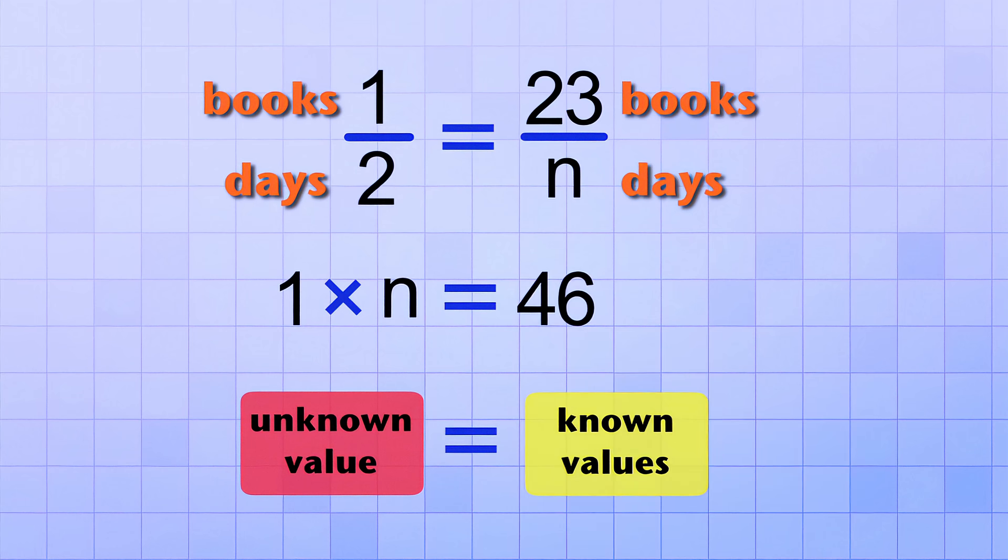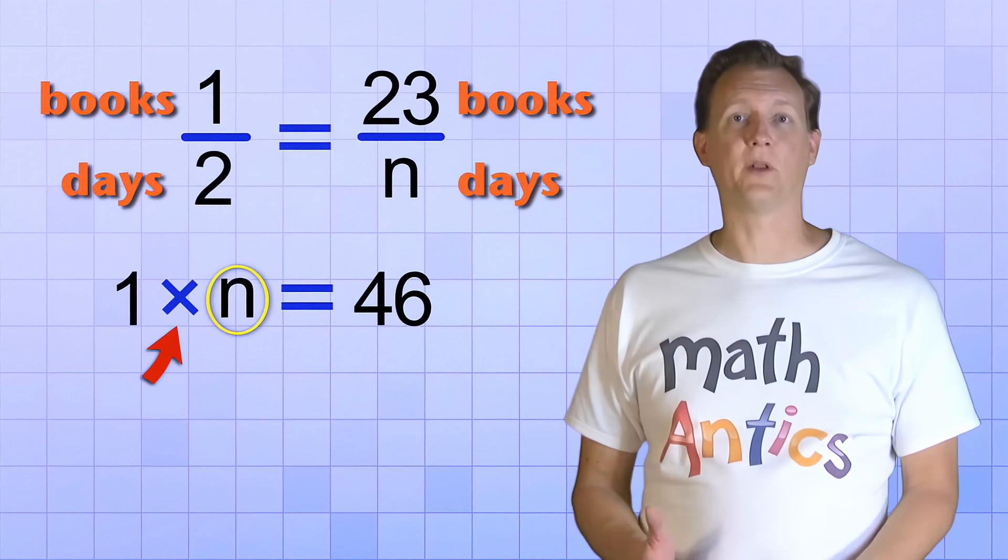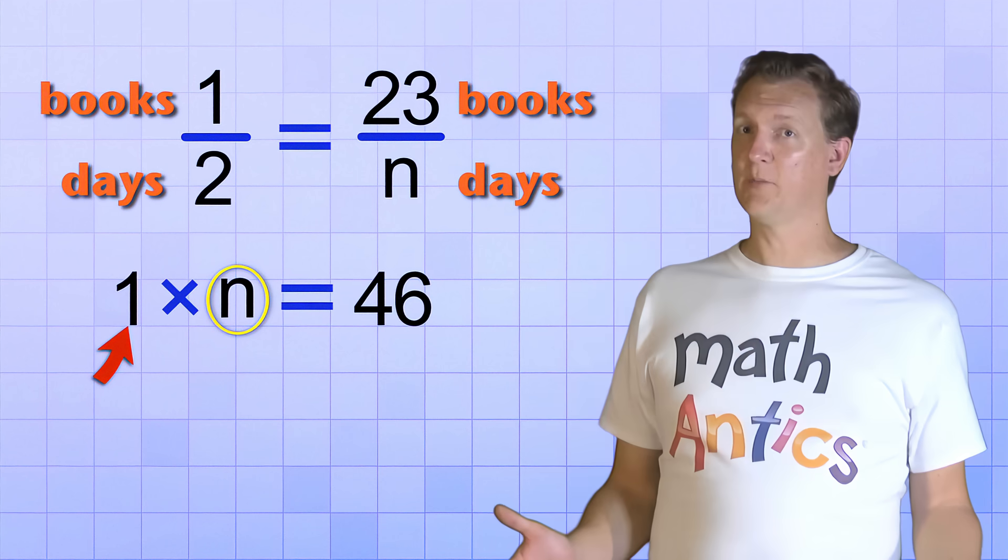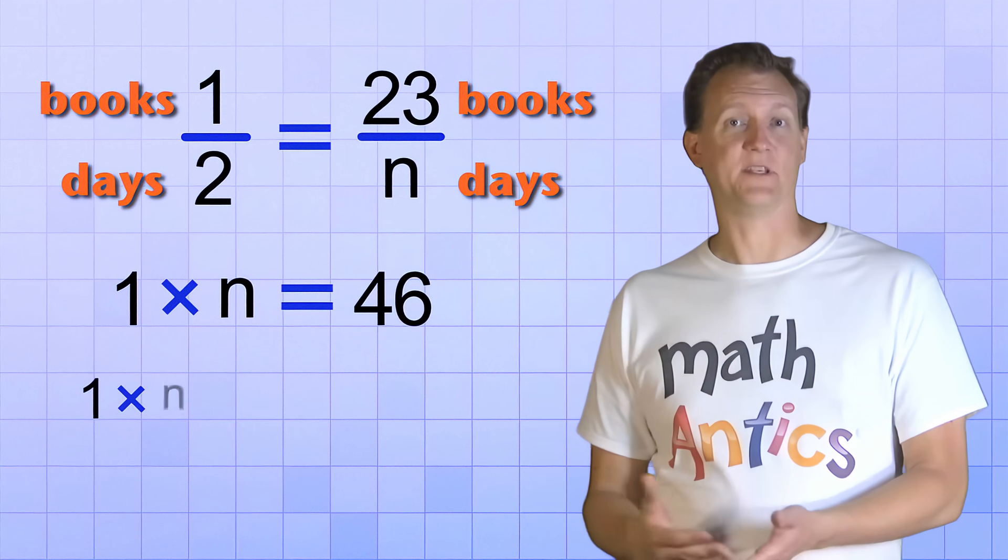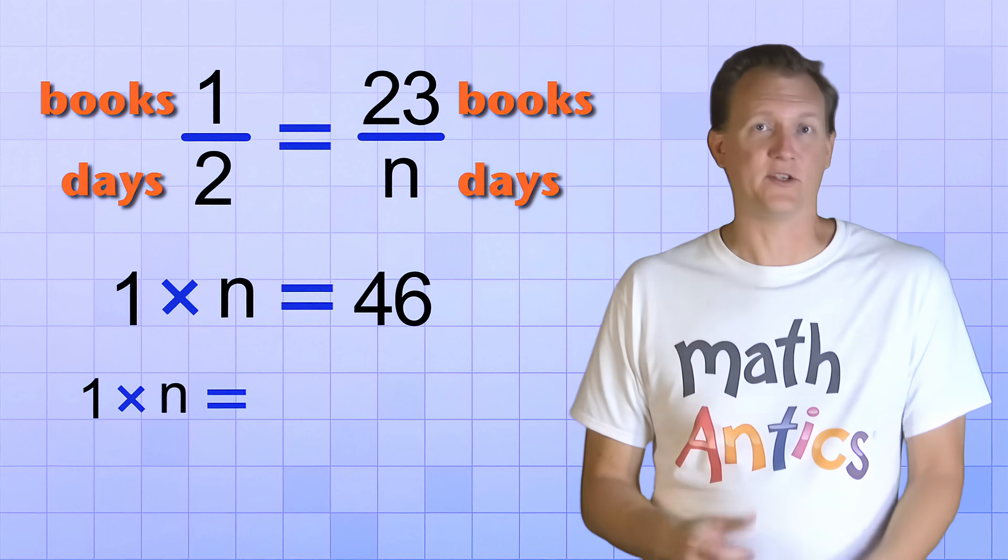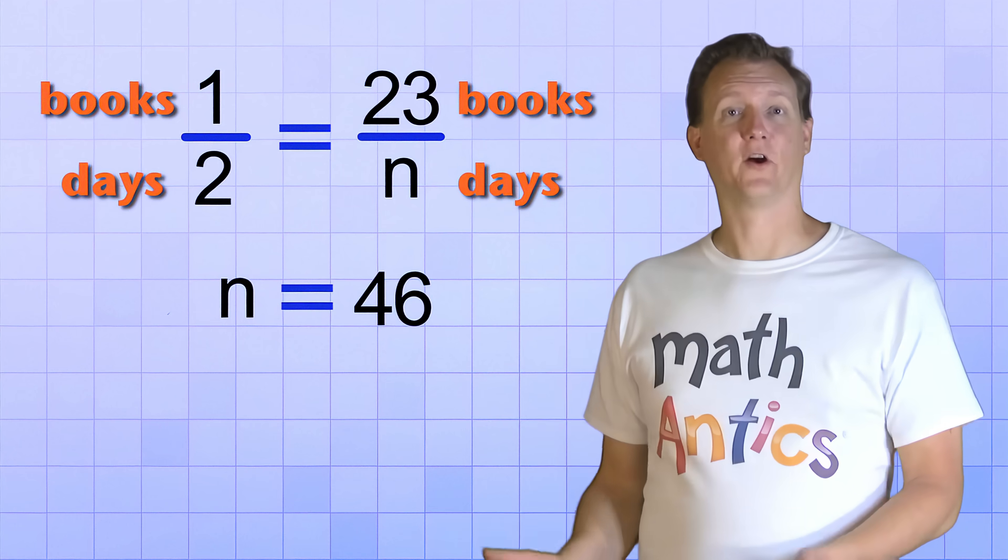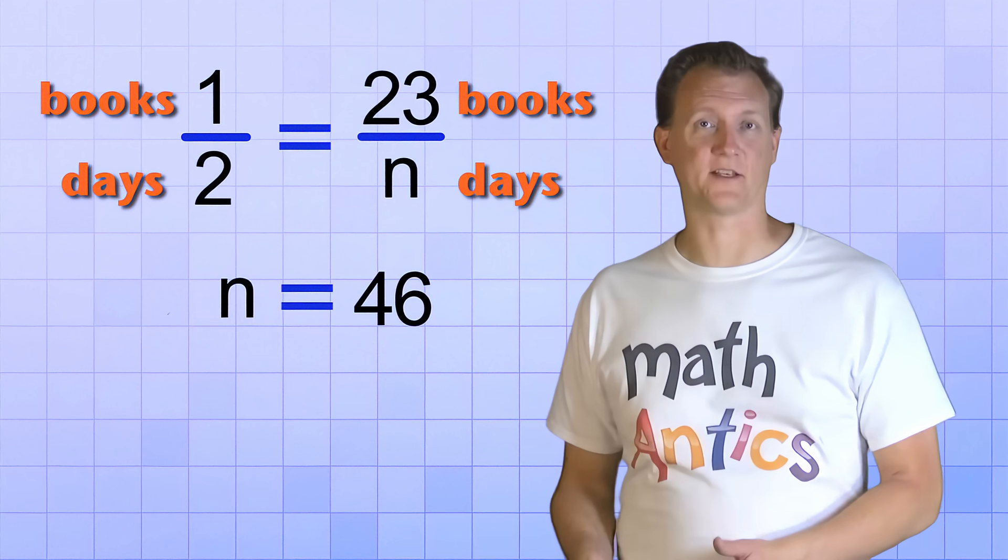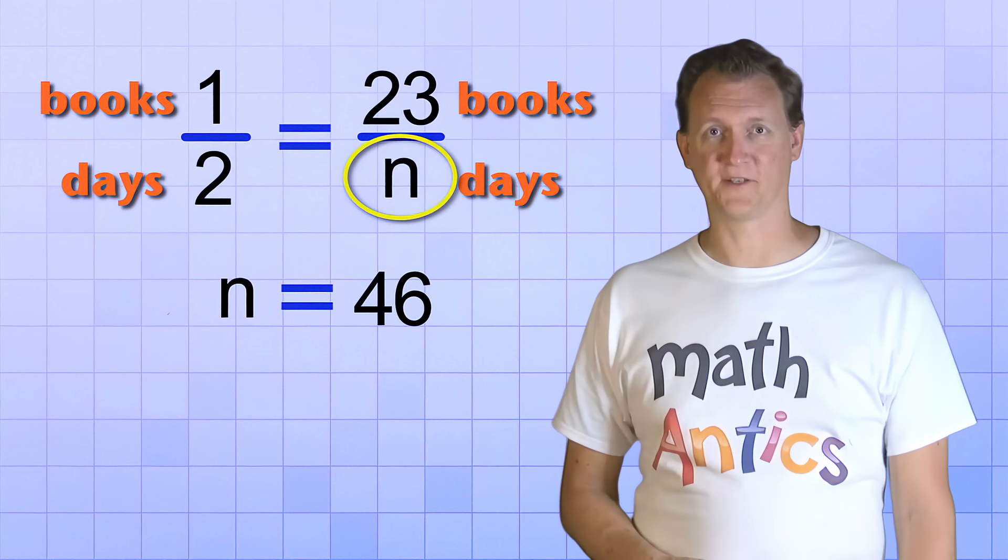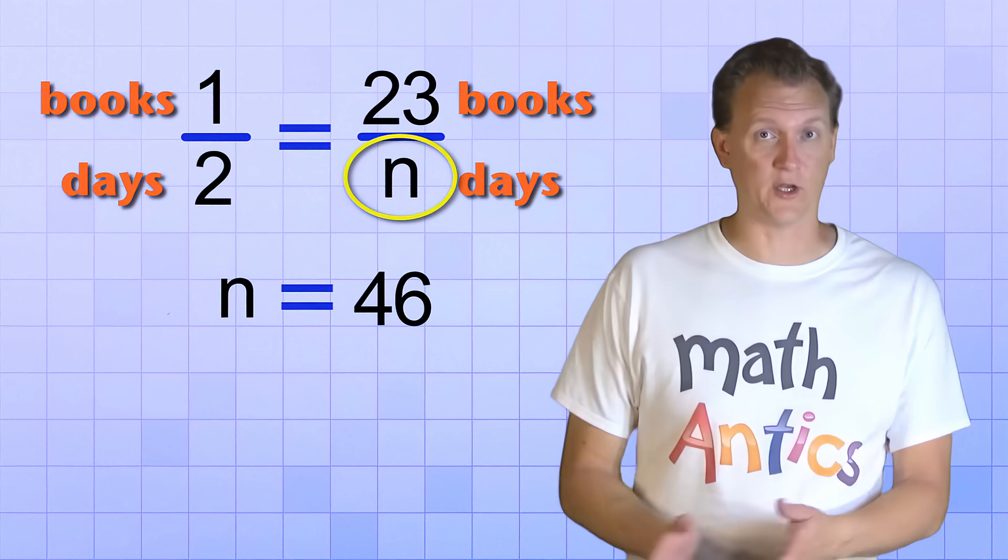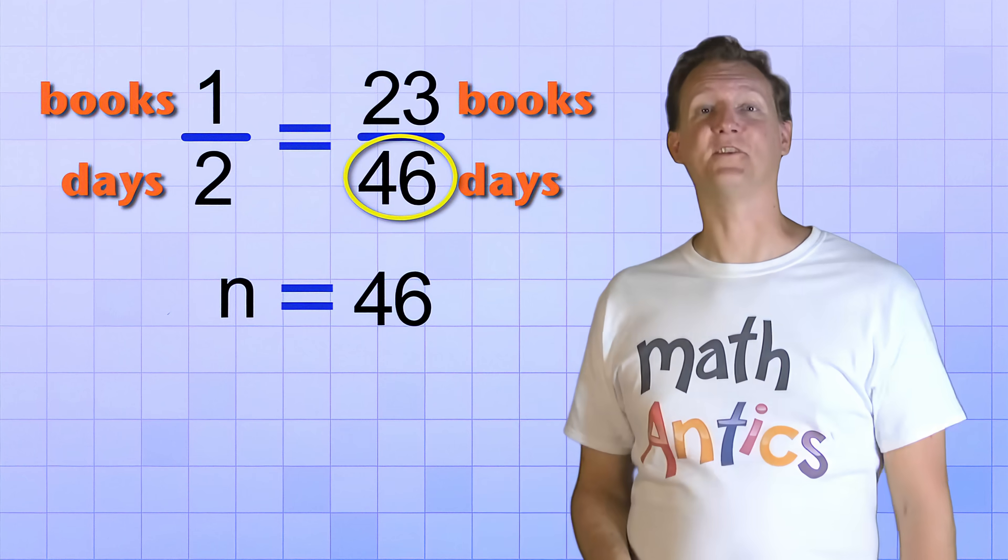Then we'll have found the unknown. In this problem, getting the N by itself is easy because it's just being multiplied by the number 1. And what happens to a number when we multiply it by 1? Yep, absolutely nothing. 1 times N is exactly the same thing as just plain N. So we can just ignore or get rid of the 1. And look, our equation is now N equals 46. That means that we know what N equals. We've figured out what the missing number of our proportion is. If our student can read 1 book in 2 days, then they can read 23 books in 46 days. We've used a proportion to solve for an unknown.